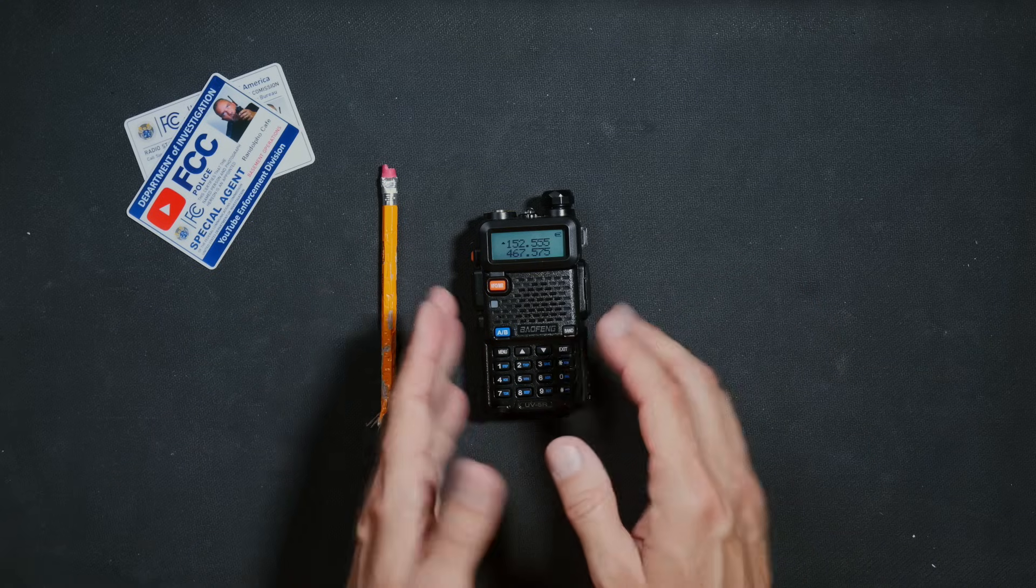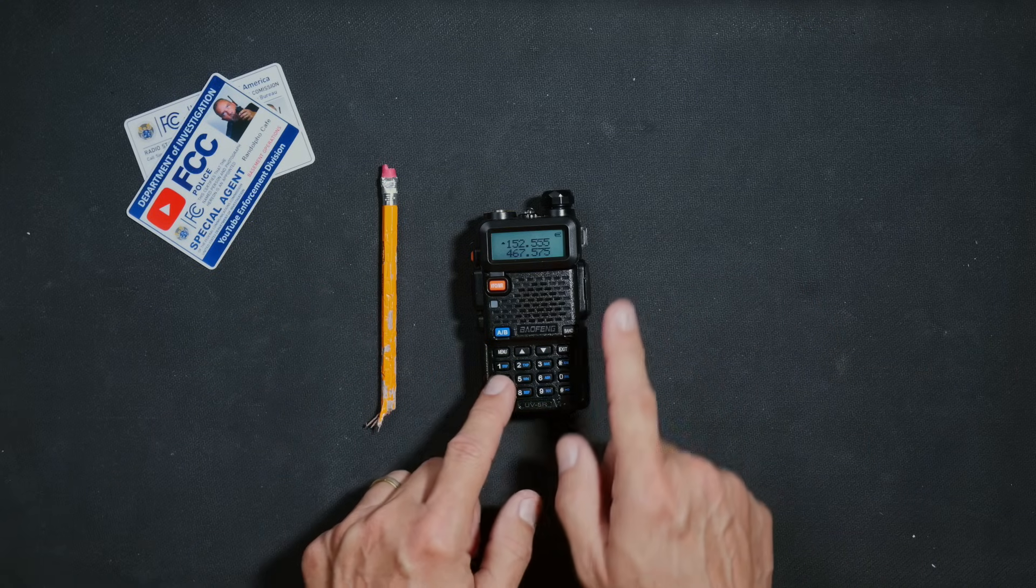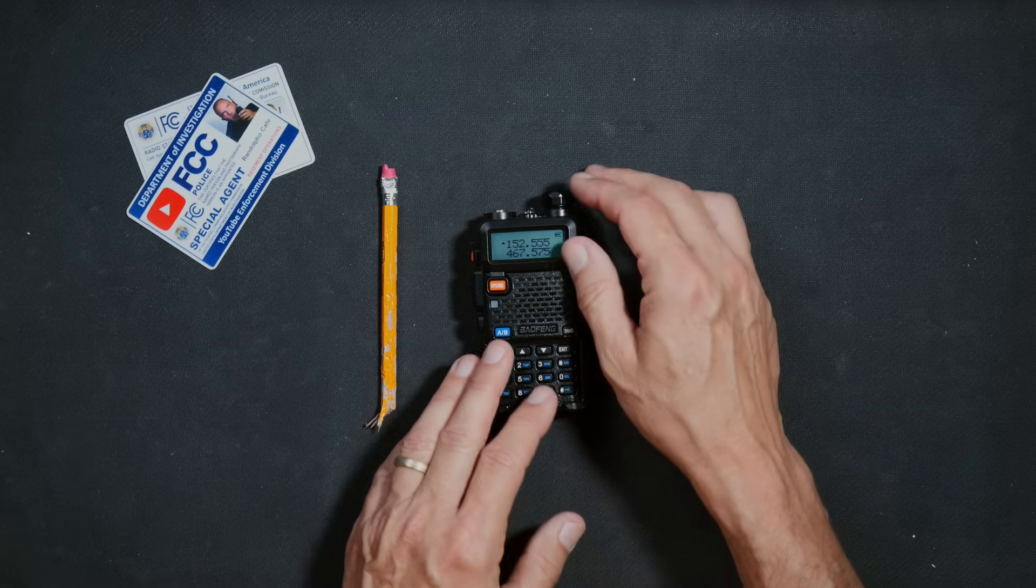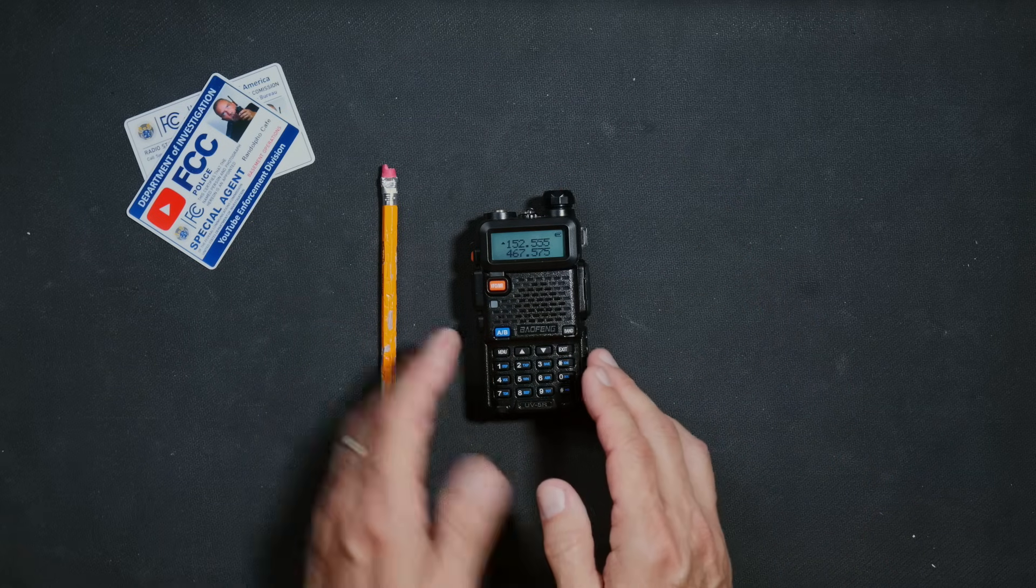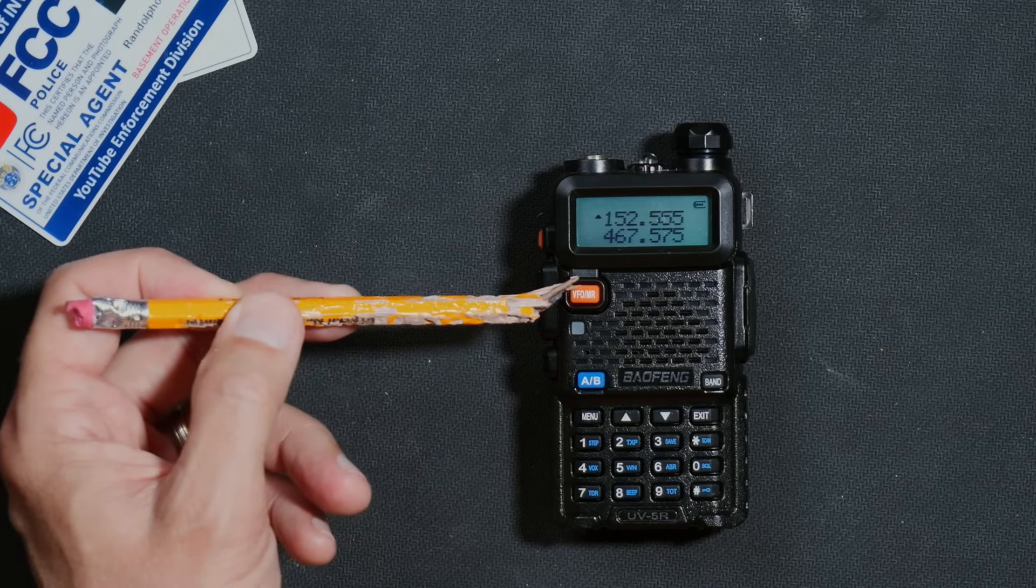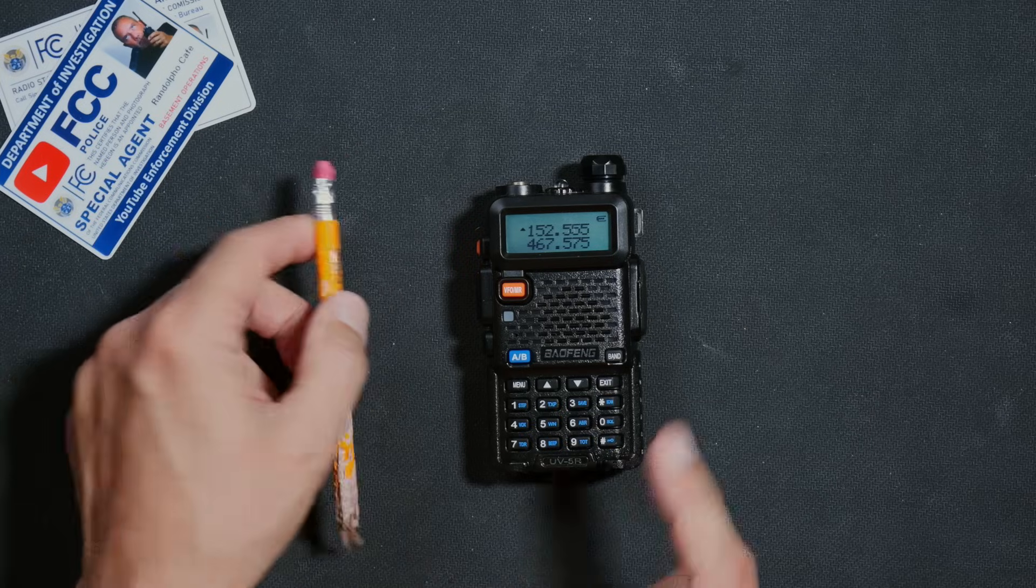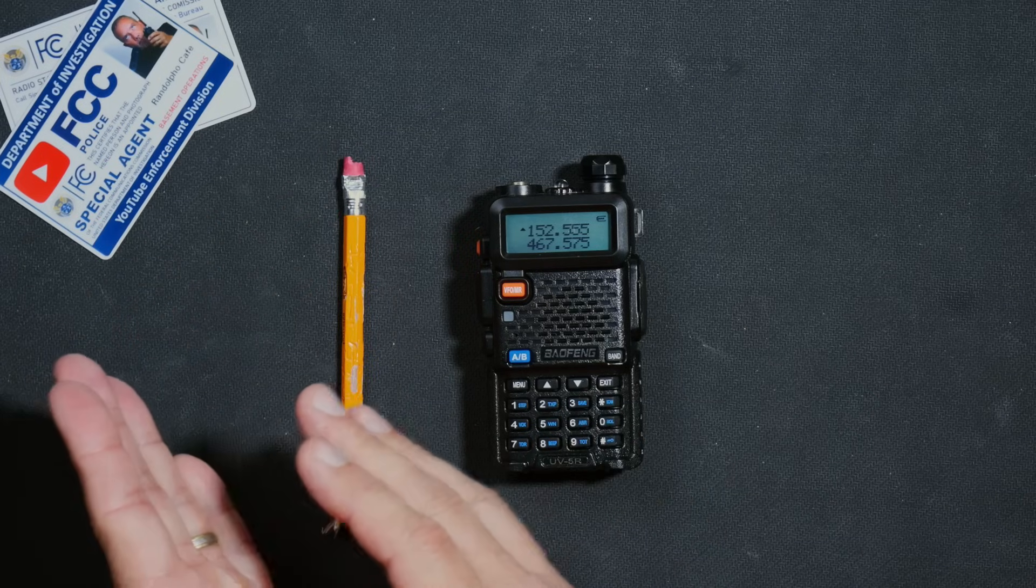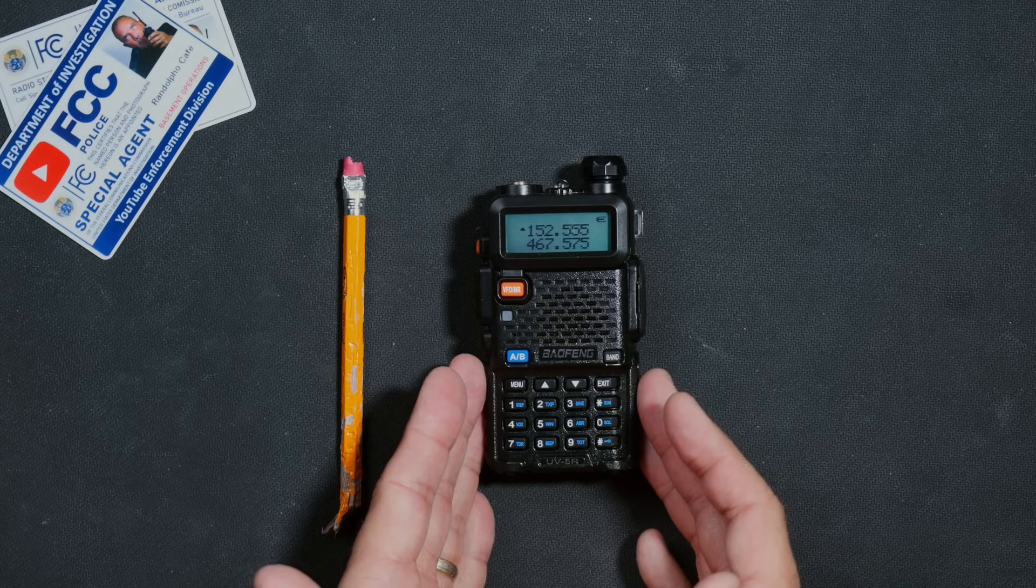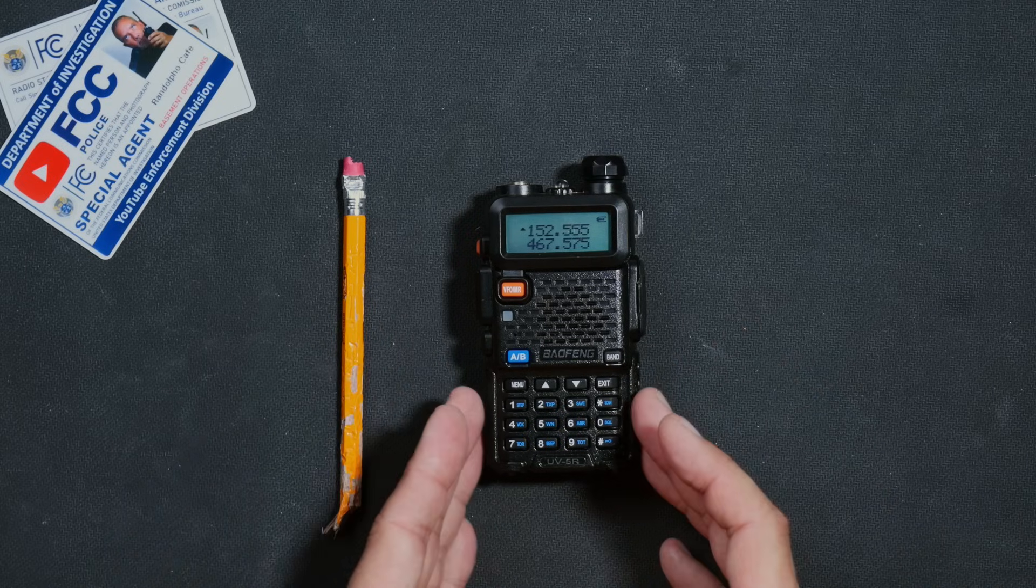To save a frequency as a channel for quick and easy access on your radio, you must first put the radio into VFO mode, also known as frequency mode. To do this, you simply crush the big orange VFO MR button, which will switch the radio between channel mode and frequency mode, or as us radio experts refer to it, VFO mode. Thusly.